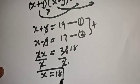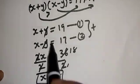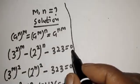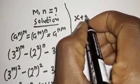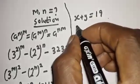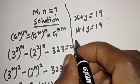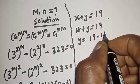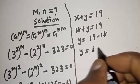Now we've gotten the value of s. Let's find y using equation 1. We have s plus y equal to 19. Substituting s equals 18: 18 plus y equals 19. Therefore y equals 19 minus 18, so y is equal to 1.